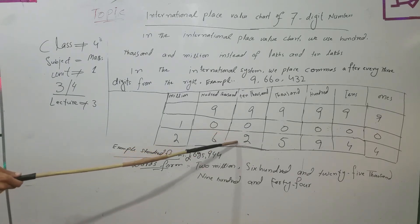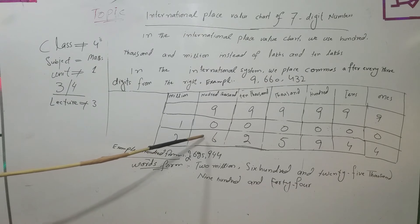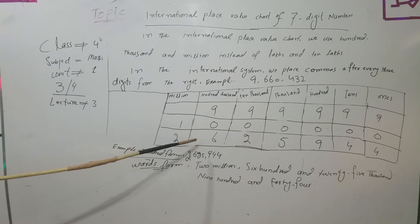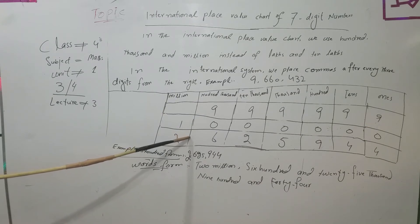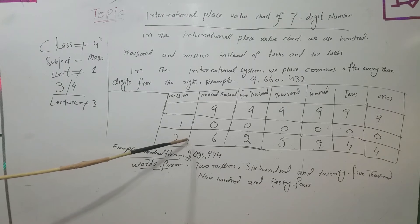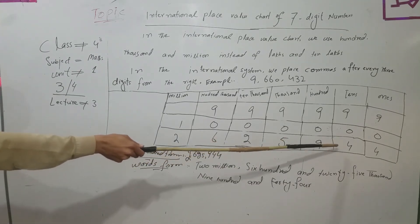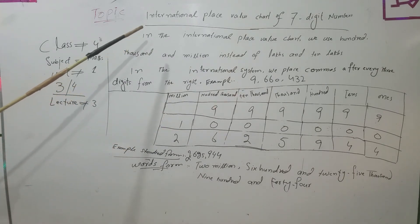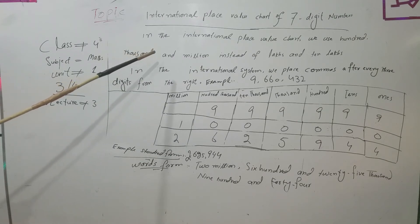The difference between the Pakistani and International place value systems is that in the Pakistani system we use ten thousand, lakh, ten lakh, crore, and ten crore. In the International system there is no lakh or ten lakh — instead we use hundred thousand and million. So the number in words form for the international system is: two million six hundred twenty five thousand nine hundred and forty four.